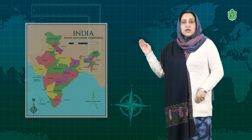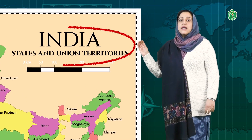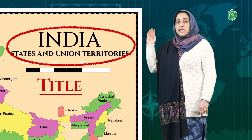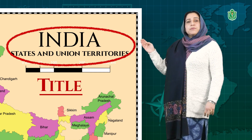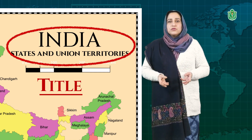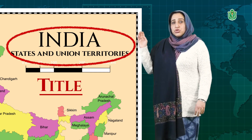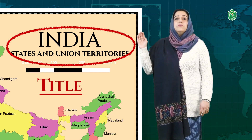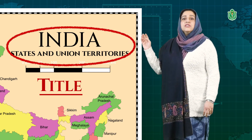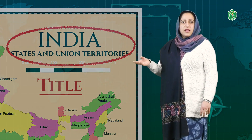The title can indicate various types of information — agriculture, mineral distribution, or population. The title of the map tells us what information is being given, making it easy to understand. When you look at the title, you immediately know what the map is about.